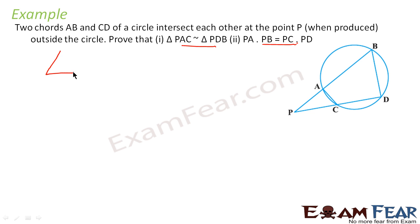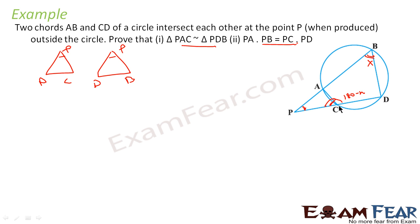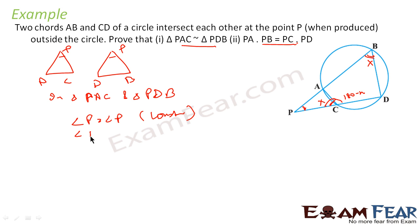Taking triangle PAC and triangle PDB: angle P is equal to angle P by construction, because it is a common angle in both triangles. Angle C will be equal to angle B — because if one angle is X, then the opposite angle in the cyclic quadrilateral is 180 minus X. So in triangle PAC and triangle PDB, angle P equals angle P by construction, and angle PCA equals angle PDB.